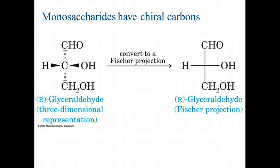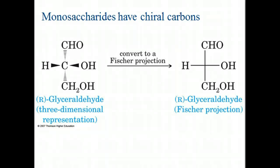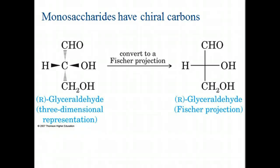Chiral compounds are asymmetric. They have four different constituents, meaning they can exist in two different tetrahedral arrangements called stereoisomers. Because the stereoisomers have slightly different chemistry, there is a difference between their binding to molecules.